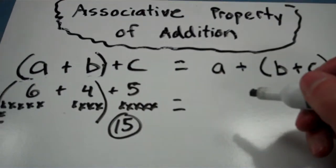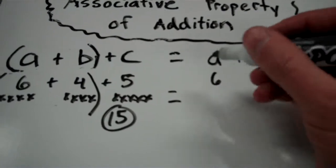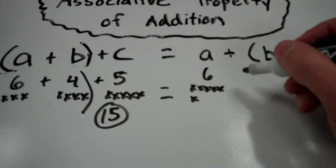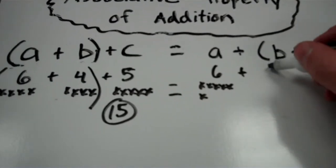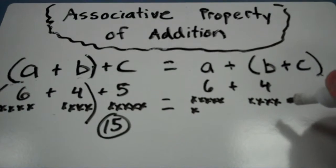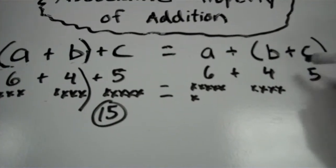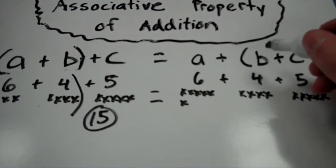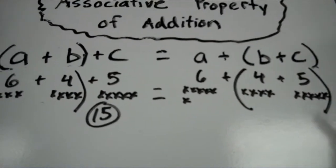Let's see if the same thing happens on the other side. A will still make 6. 1, 2, 3, 4, 5, 6. B will still make 4. 1, 2, 3, 4. And c will still make 5. 1, 2, 3, 4, 5. But this time we're going to group the 4 and 5 together in parentheses.